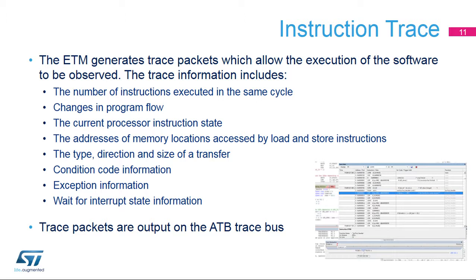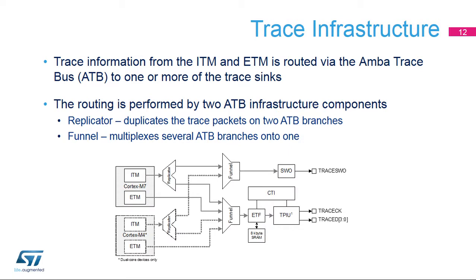Note that the ETM in the Cortex-M7 is quite different from the one in the Cortex-M3 or M4. The ITM and ETM both generate trace streams, which are combined using the trace funnel. Some funnel parameters can be modified, for example the number of bytes received on one input before switching to another. The less switching that occurs, the lower the overhead, but at the cost of increased latency. It is also possible to filter trace — for example, the ITM trace can be removed from the TPIU and output on the SWO instead. Trace from the ITM, not the ETM, can be directed to the single-wire trace port.